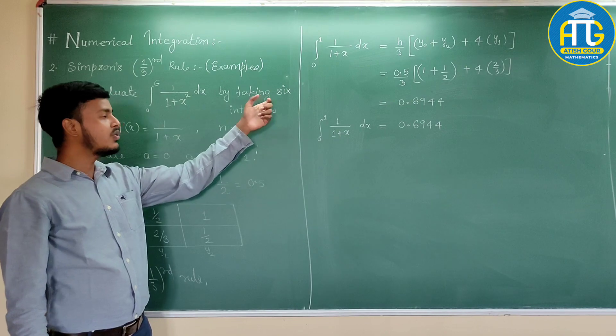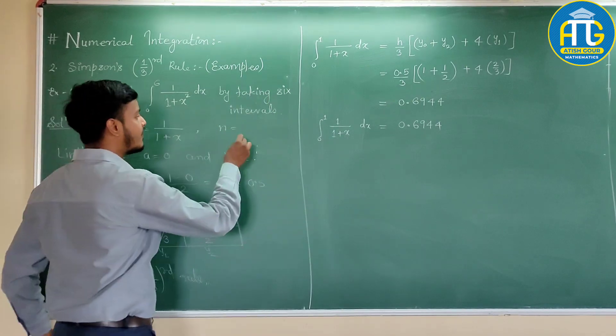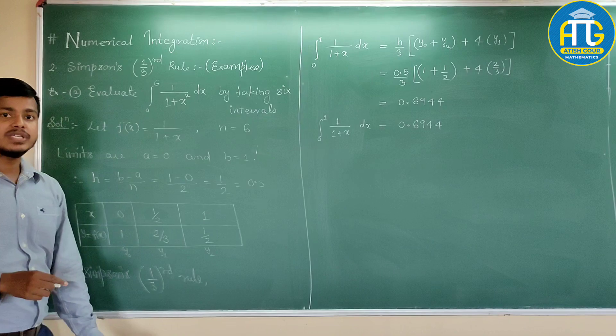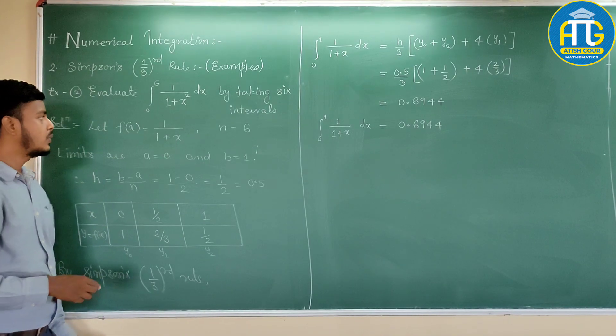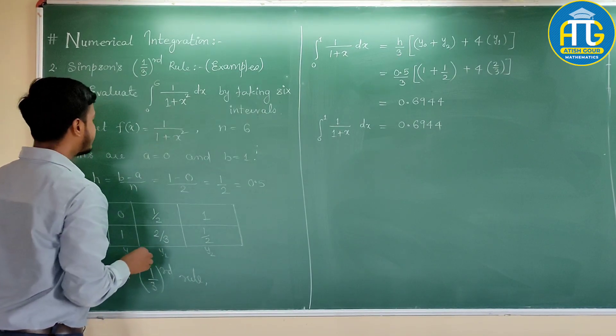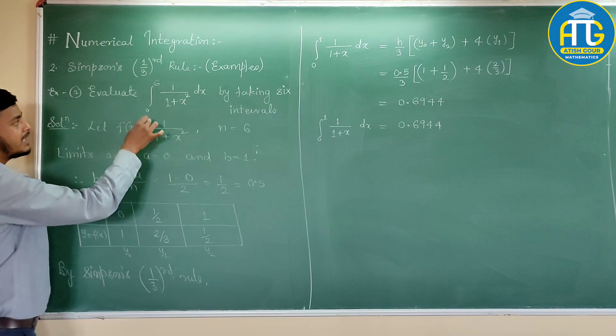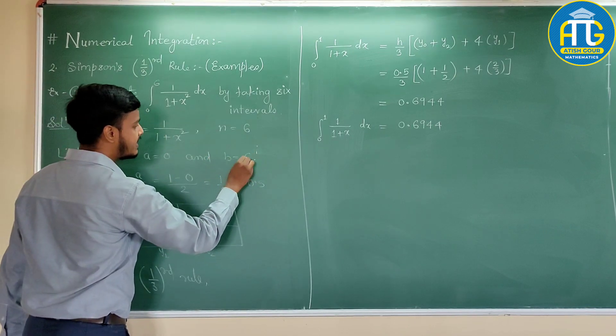The value of n, that is the number of intervals, is 6. So we adopt Newton's one third rule. Here f of x is this. What is the lower limit? 0. Upper limit is 6.